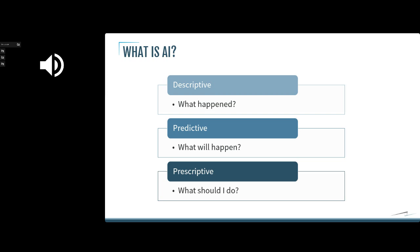Prescriptive AI asks 'what should I do?' — it looks at the data set and makes a decision about what action you should take based on what it sees. It prescribes an action based on the data it has. Keep in mind these are really all data-based activities — looking through lots and lots of data to make these decisions. We'll talk more about the learning piece shortly.